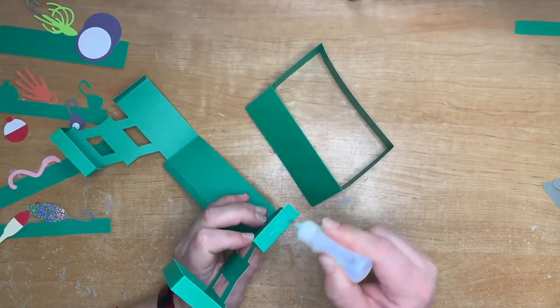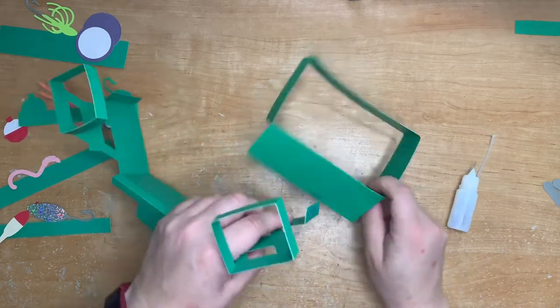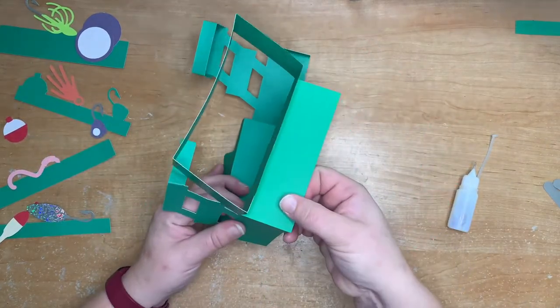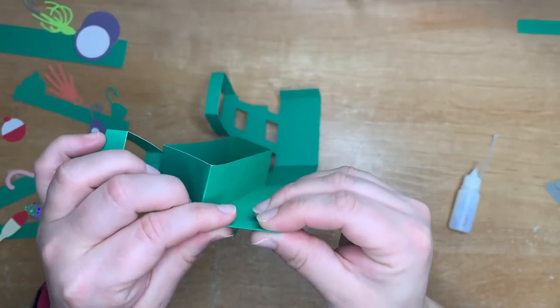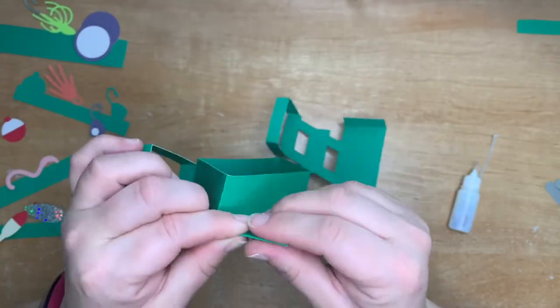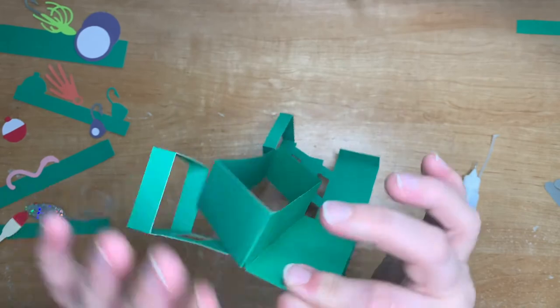Once you put all that together, add some glue to the tabs on the two side pieces here and attach the back piece to those tabs, creating the full tackle box shape and connecting all the sides.